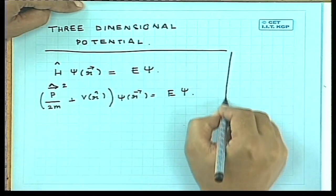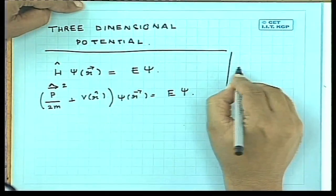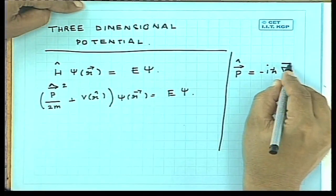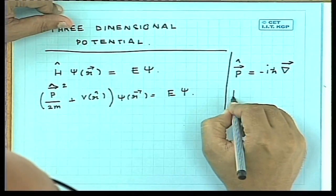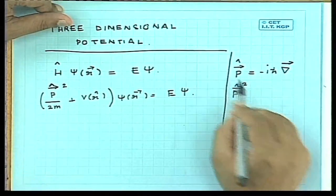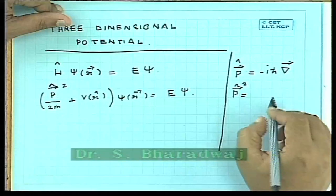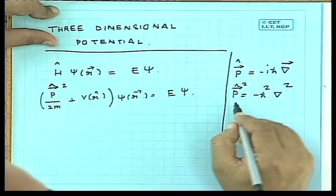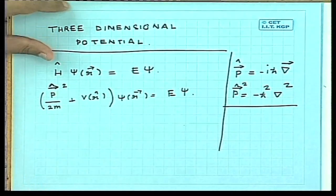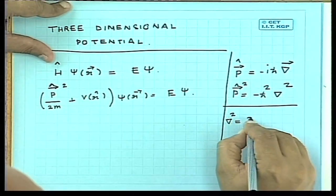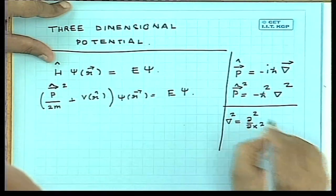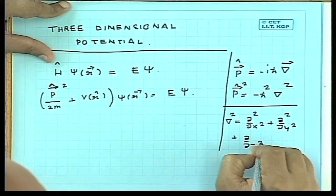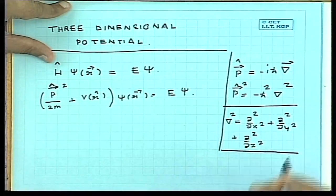The momentum operator is minus i h-bar times the gradient operator. The momentum has got three components: Px, Py, Pz. And the square of this is minus h-bar squared times the Laplacian. In the Cartesian coordinate system, the Laplacian del-squared equals del²/dx² plus del²/dy² plus del²/dz².